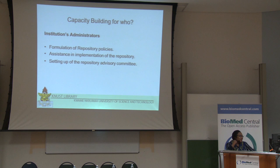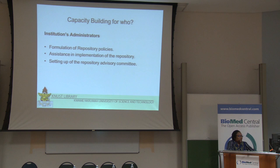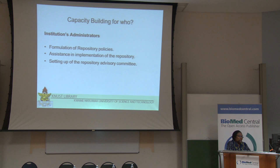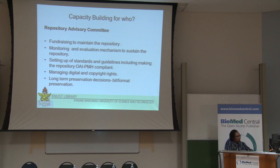Then the institutional administrators themselves - because if we formulate the policy, we need the institution to approve it. So we needed to build the capacity to show that without this, the repository cannot run, and bring them into that. We also made them understand how the administration would need to support us in getting faculty to bring in their research results, and also if there was need for any funding. We started without any funding from the main university - the library's own funding is what we started with. Then we also needed to set up a repository committee. These processes really helped because at the end of the day all the people in the university now know what it is about.